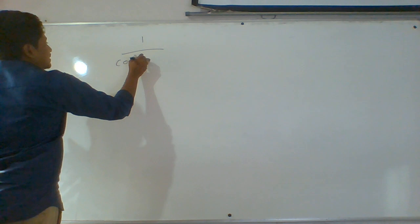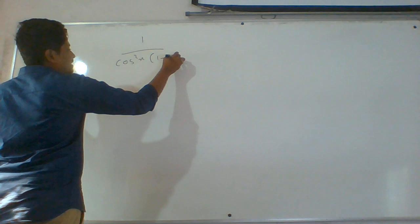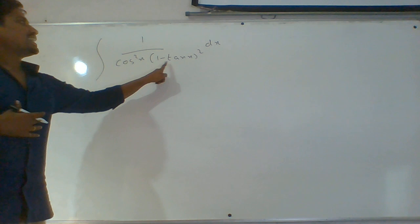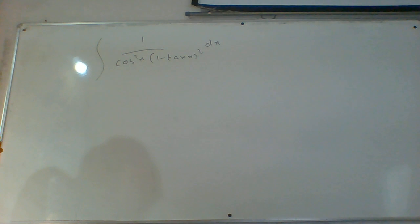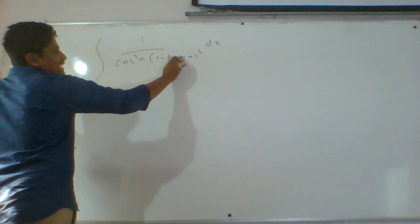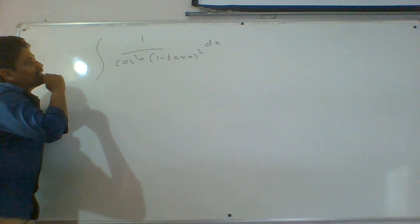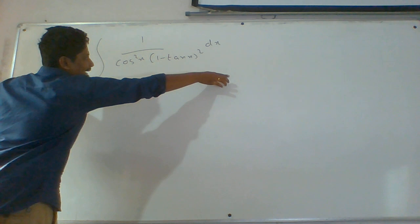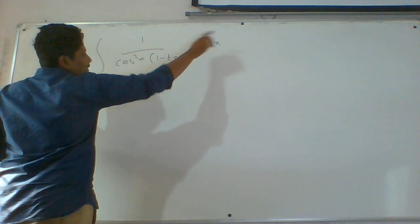Question 28: 1 by cos square x into (1 minus tan x) whole square dx. It is somewhat complicated to assume which thing to consider as t. If we consider 1 minus tan x as t, the derivative of 1 minus tan x is minus sec square x. And 1 by cos square x equals sec square x, so this is recognizable.